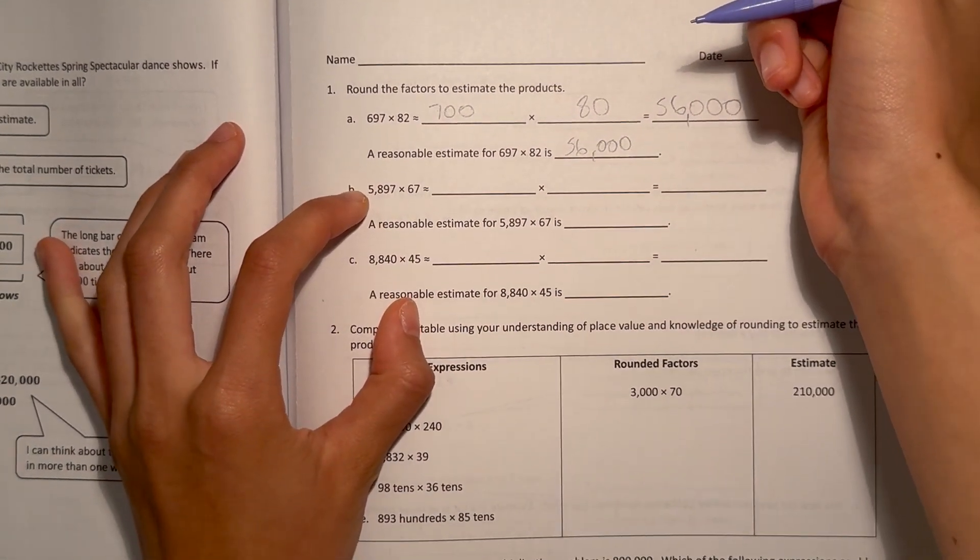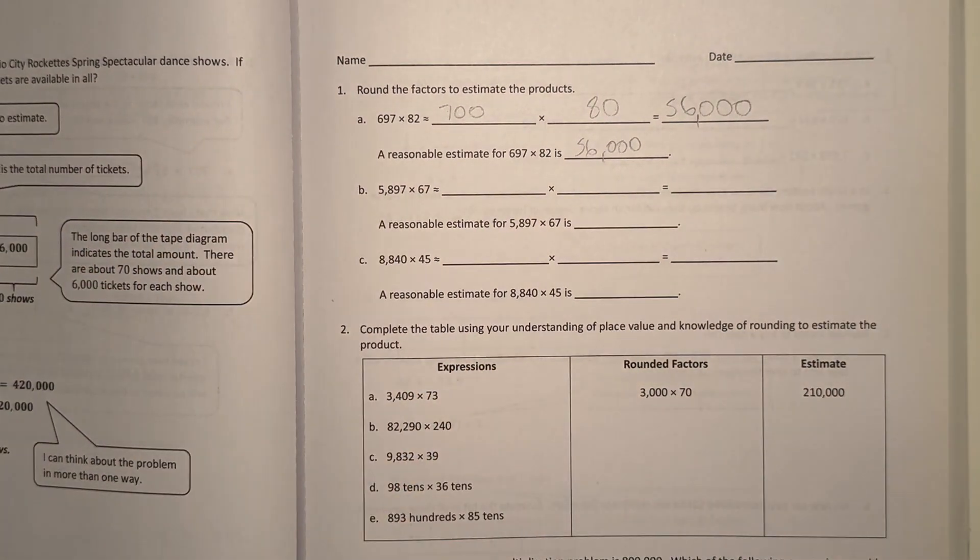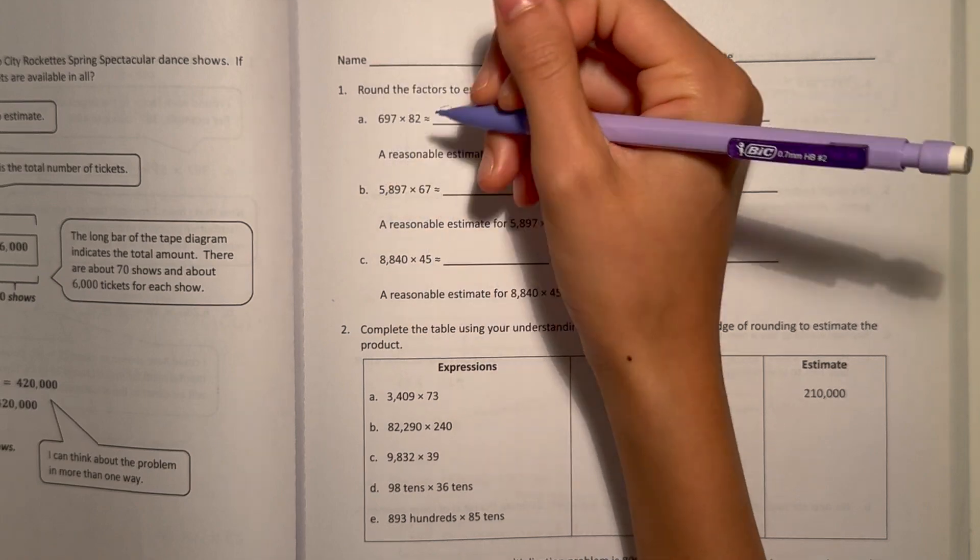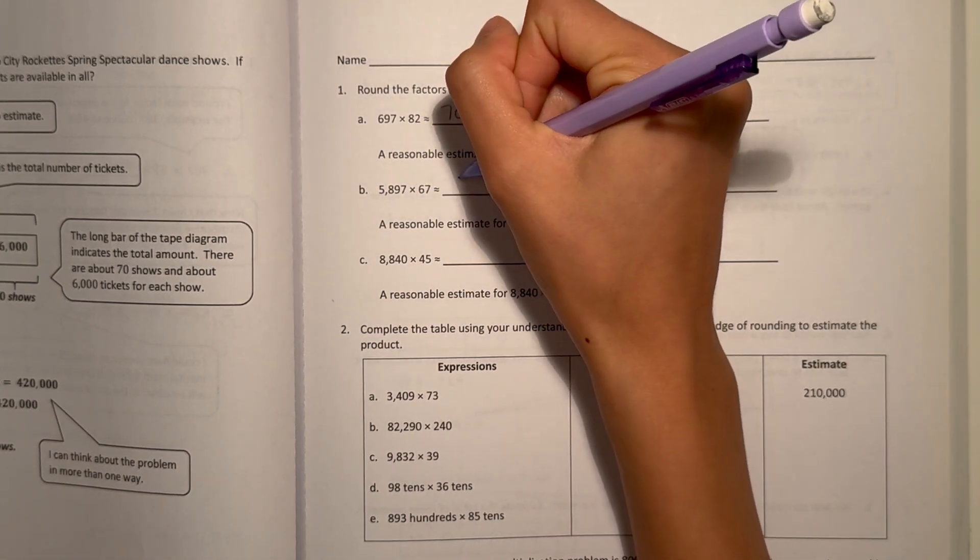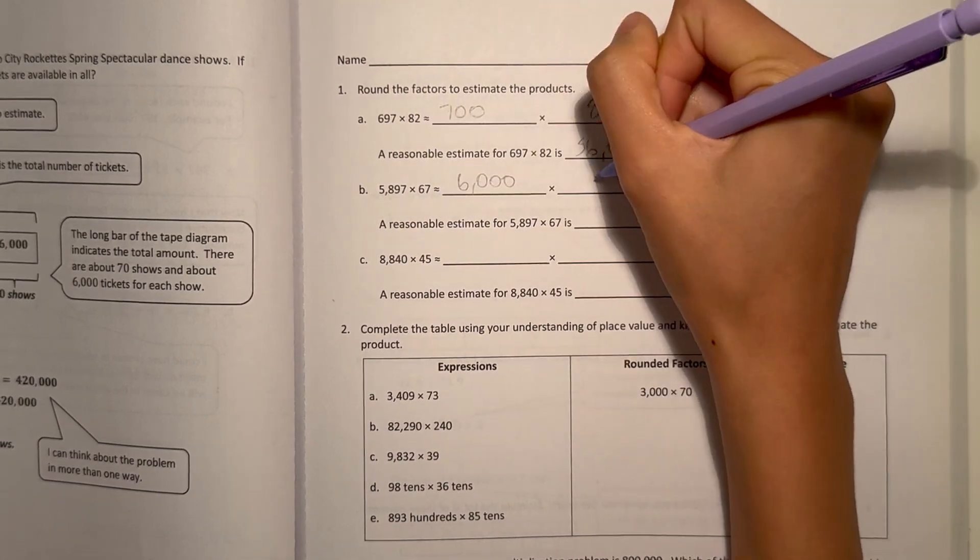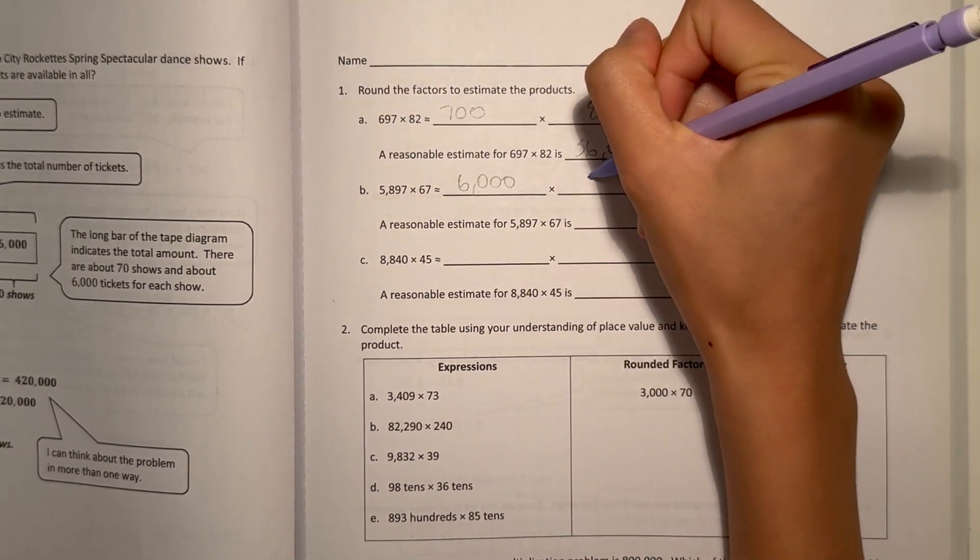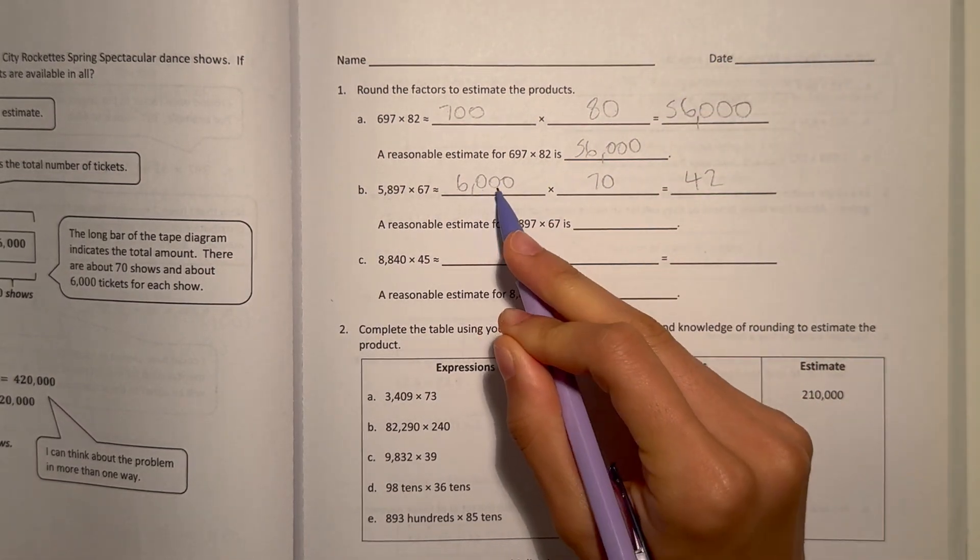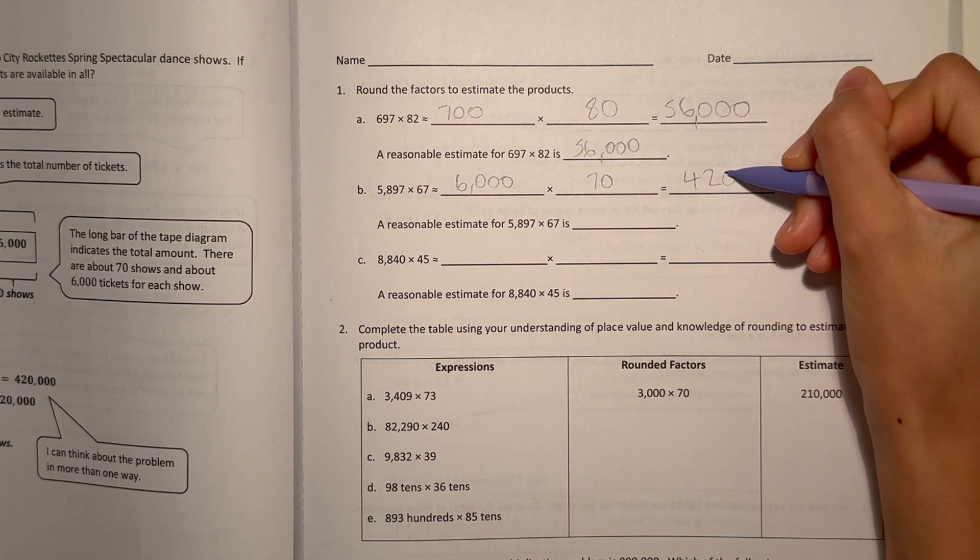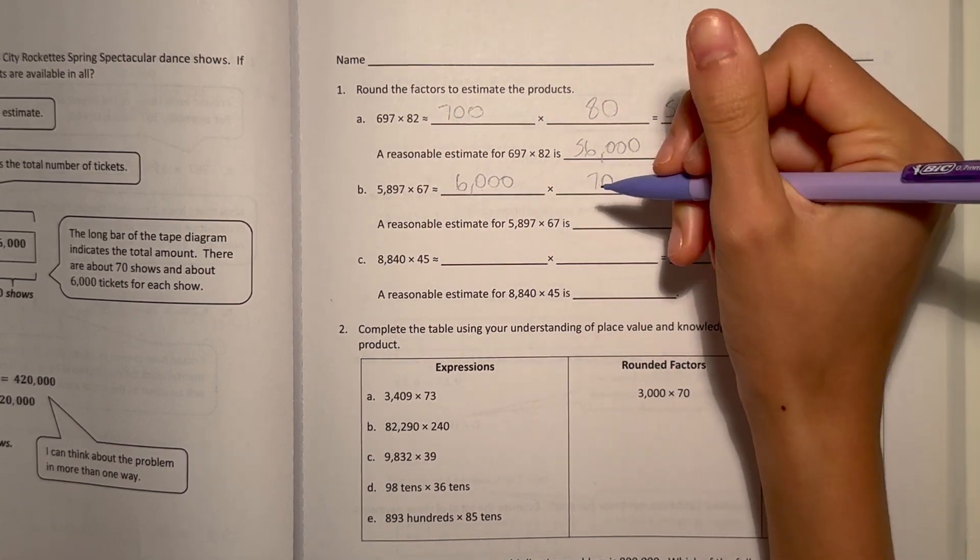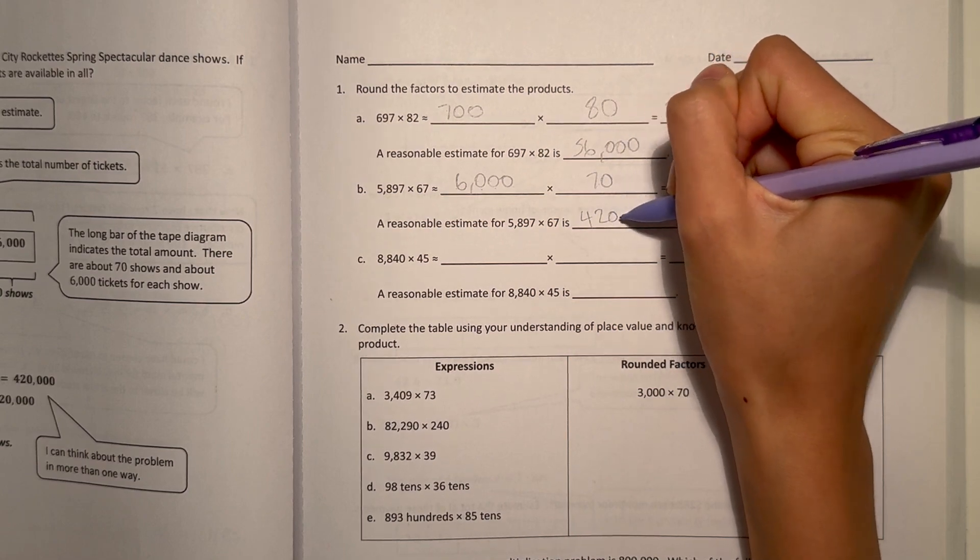Alright, and B, 5,897 × 67. So rounding to the nearest thousands, that would be 6,000. 6 × 7 is 42, and there's 1, 2, 3, 4 zeros. So our answer, a reasonable estimate would be 420,000.